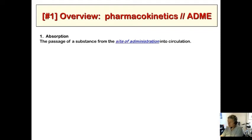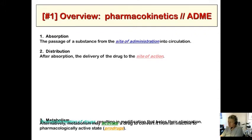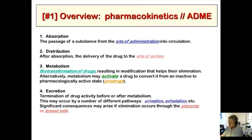Absorption is the passage of a substance from the site of administration into circulation. Distribution is, after absorption, the delivery of the drug to the site of action. Metabolism is the biotransformation of drugs resulting in modification that helps their elimination. Alternatively, metabolism may activate a drug to convert it from an inactive to a pharmacologically active state — that's what we call a prodrug. We've seen a couple of prodrugs throughout this course.